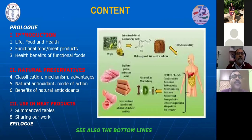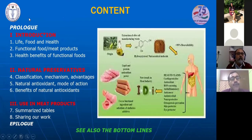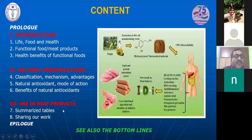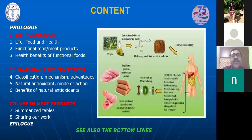Here is the content I am planning to cover. I will start with a prologue and end with an epilogue. The introduction will cover basic life processes, functional foods, functional meat products, and health benefits. The major part is on natural preservatives — classification, mechanism, advantages — with more focus on natural antioxidants, their modes of action and benefits. In the third part, I will summarize a large number of research works done in this field, share some of our own projects, and end with the epilogue.